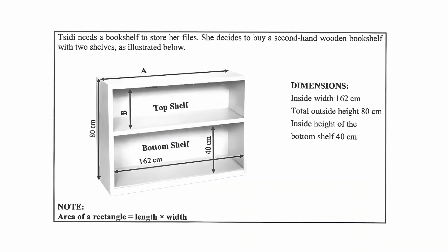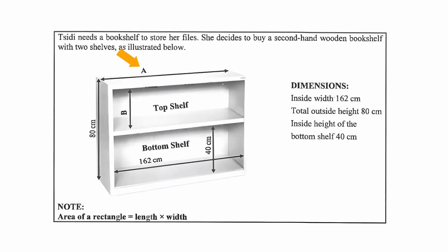The first thing we should take note of is that there are two types of dimensions: inside dimensions and outside dimensions. If you are not paying careful attention, you might assume that the length of A equals 162 centimeters, which is not correct. The length of A is slightly bigger than 162 centimeters — it depends on the inside dimension of 162 centimeters plus the thickness of both sides of the shelf.